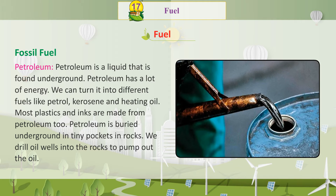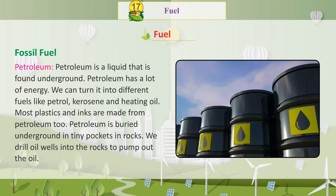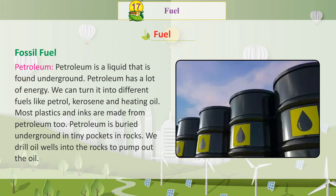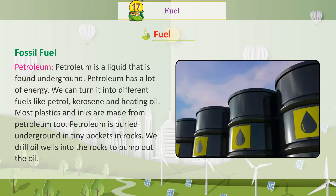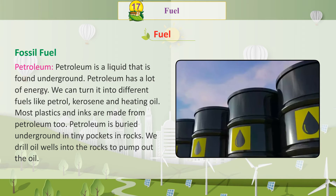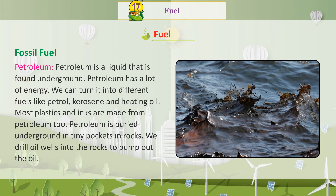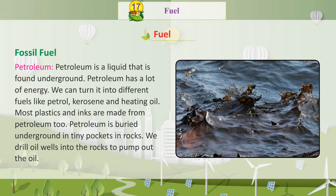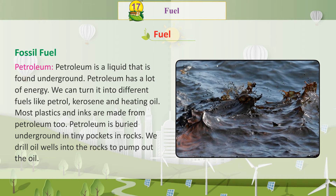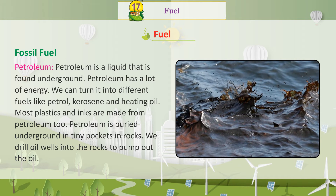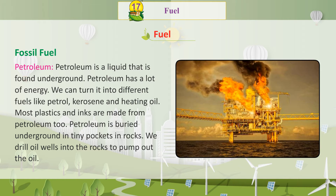Petroleum is a liquid that is found underground. Petroleum has a lot of energy. We can turn it into different fuels like petrol, kerosene, and heating oil. Most plastics and inks are made from petroleum too.